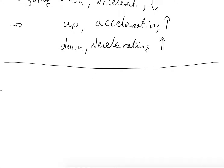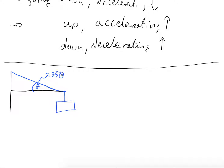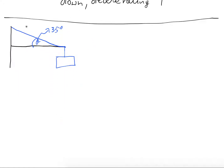Problem number four is exactly the same as the homework problem. We have a support sticking out from the wall and a sign suspended from that support. We know the steel cable holding the full system is at an angle, and we're trying to find the tension T in that cable, which acts along the cable.